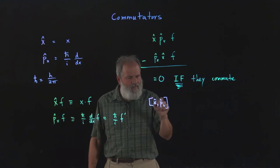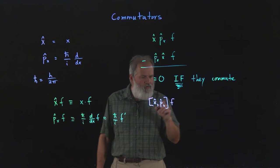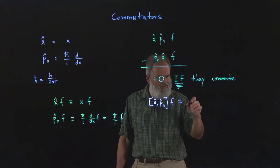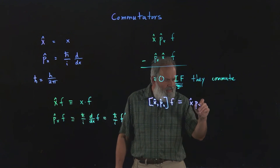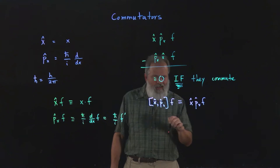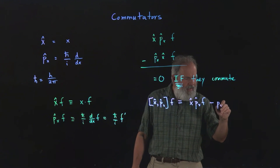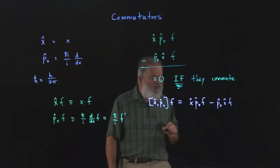So what we do is we write down the notation for these. We use a square bracket and then the two operators separated by a comma. And if we apply that to a function, then this means do the order in which it's written in the box first, x hat p_x hat f, and then you subtract the reverse order minus p_x hat x hat f. So we're going to do that.